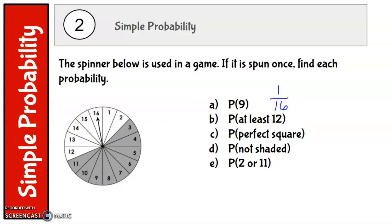Now let's take a look at the probability of at least 12. So at least 12 would include 12, 13, 14, 15, and 16. So there are 1, 2, 3, 4, or 5 elements that are our favorable outcome of at least 12 out of a total of 16 spaces.